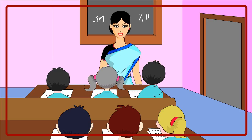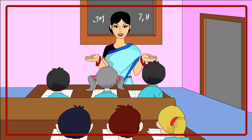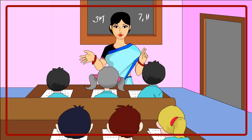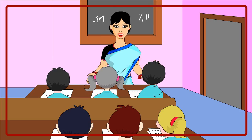Sugar is converted into starch. The food produced by the plant is used for its growth, while the rest is stored in different plant parts.